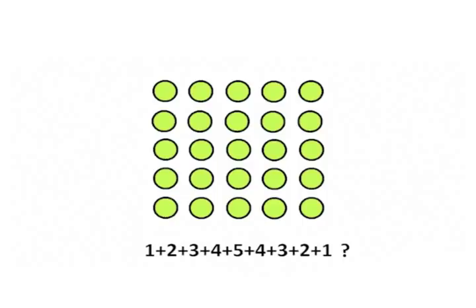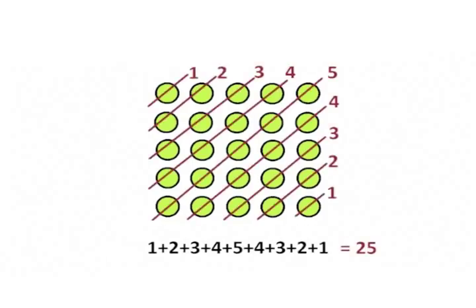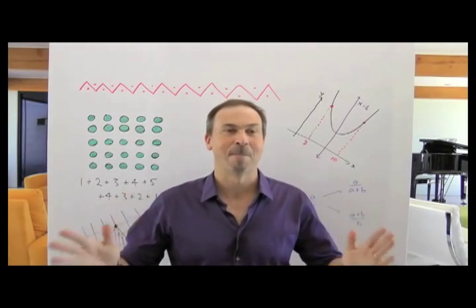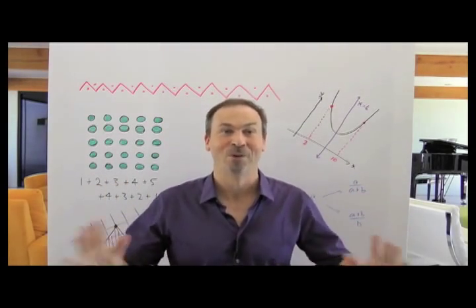You might stare at it for a while, wondering why I think it's a picture of this sum. But eventually, you will have an epiphany. Pause now if you don't want me to ruin that experience for you. Focus on the diagonals of the array and then, like magic, you see the sum 1 plus 2 plus 3 plus 4 plus 5 plus 4 plus 3 plus 2 plus 1. The diagonals cover all the dots in the picture, so the sum must equal 25, all the dots in the picture.